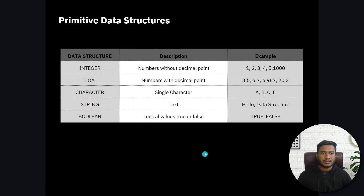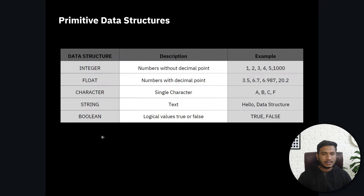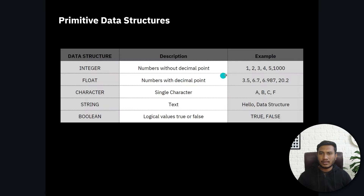Here's a table to understand primitive data structure in detail. The primitive data structures are integer, float, character, string, and boolean — you're already familiar with these because they are available in every programming language. Integer is nothing but numbers without a decimal point — for example, 1, 2, 3, 4, 5 and so on. Floating is nothing but numbers with a decimal point — for example, 3.5, 6.7 and so on.